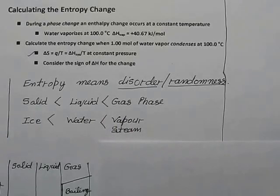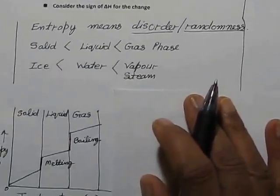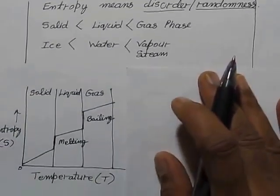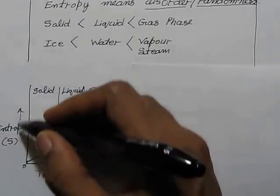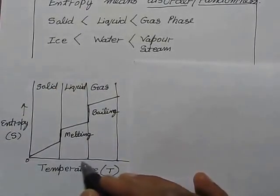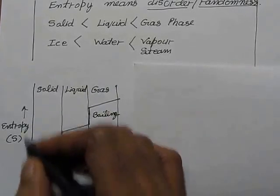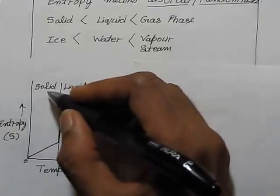Let's understand this phase change in this graph. If we have entropy on the y-axis and temperature on the x-axis, entropy will increase from zero upward.